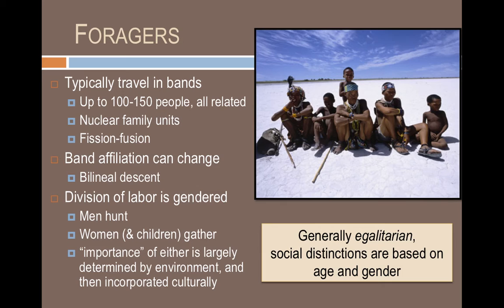A forager living in a group of 150 people will know each of those individuals very well. We, living in a city of 8.5 million people, don't know every other person in the group. So our social relationships don't have the same type of intimacy that hunter-gatherer groups have.